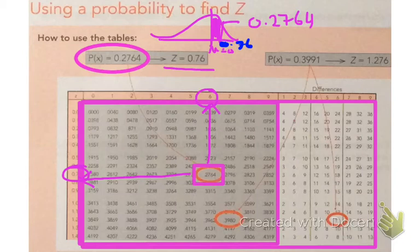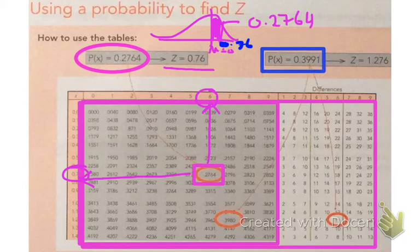So now let's try a second number. So now, let me just change the colour of my pens. So now I've got a probability here of 0.3991.